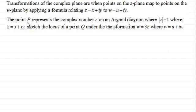I've got the point P that represents the complex number z on an Argand diagram where the modulus of z equals 1 and z equals x plus iy. What we've got to do is sketch the locus of a point Q under the transformation w equals 3z where w equals u plus iv.